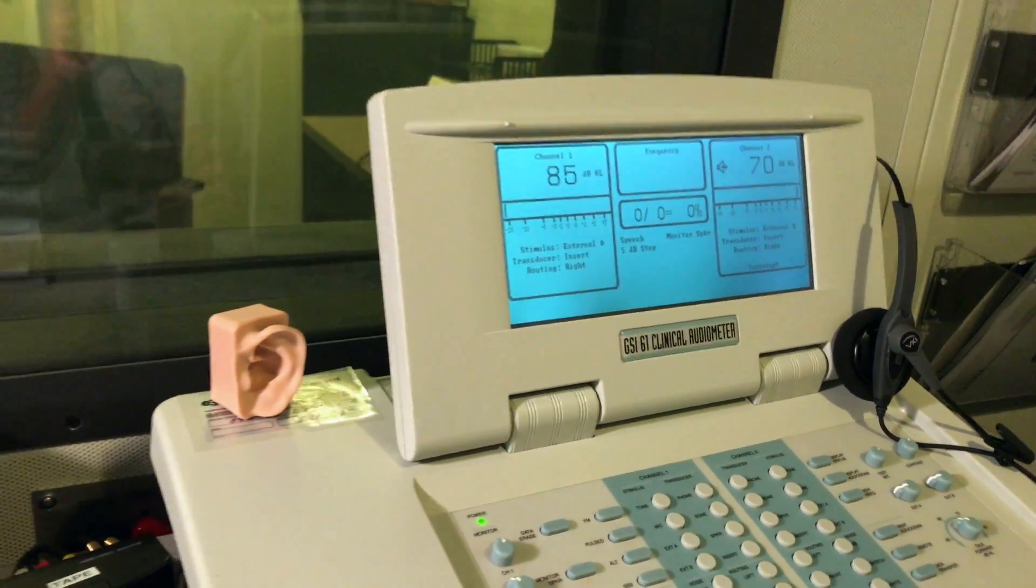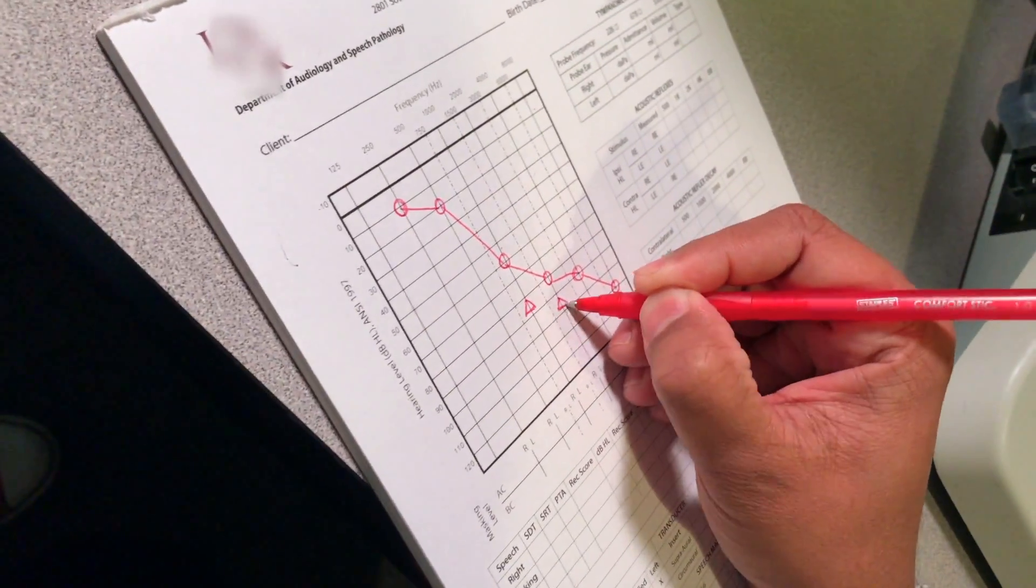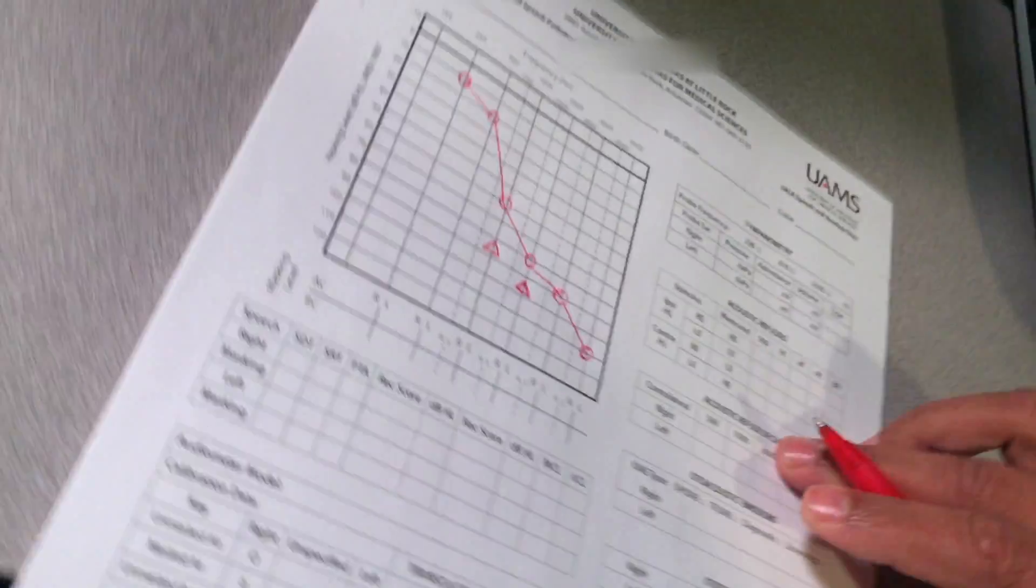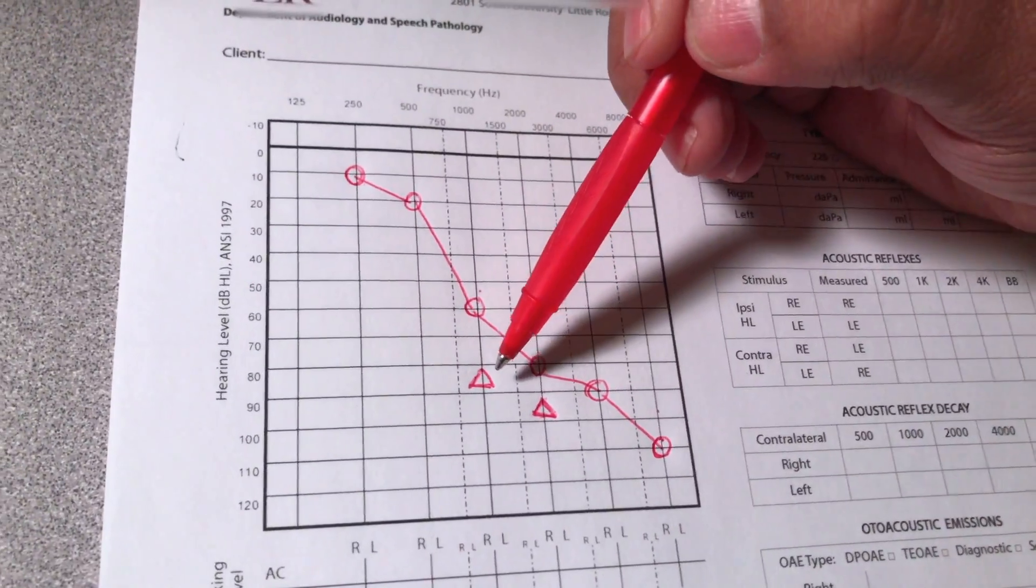Let's just assume that the person's new threshold now is 85 dB. Mark that on your audiogram. That's how you measure TEN test threshold.